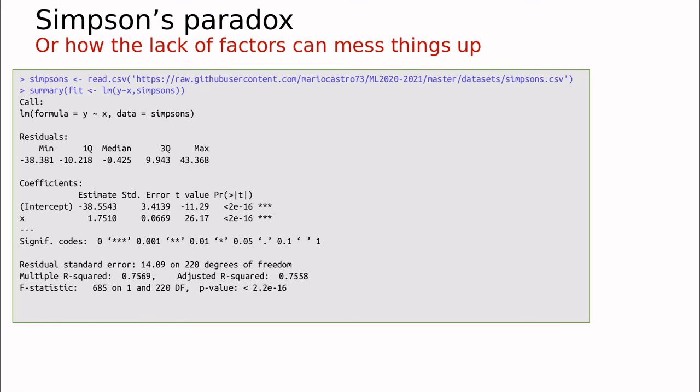I want to finish this video talking about something which is not very well-known from statisticians and machine learning practitioners. It's called the Simpson's paradox, and it could be summarized something like how the lack of factors can mess things up. So let's download this dataset. Again, you can download this from my GitHub account.